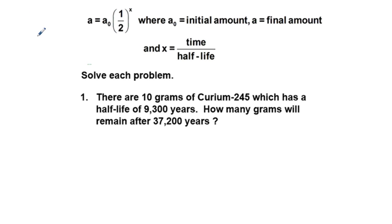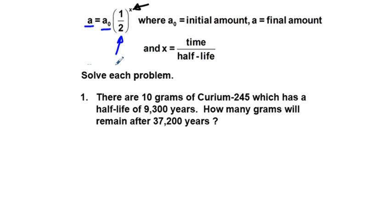These are half-life problems, which are exponential decay function problems, because we have a function where the variable is an exponent, in this case to the power of x. The formula we're going to use is the half-life formula: A, which is our final amount, equals A sub-zero, which is our initial value or amount, times one-half, which is the base of our exponent, to the power of x. X is our variable, which we plug in to find out how much material we have left.